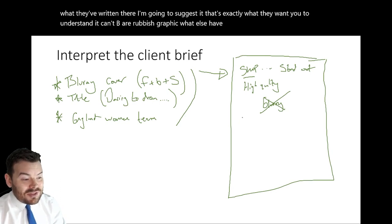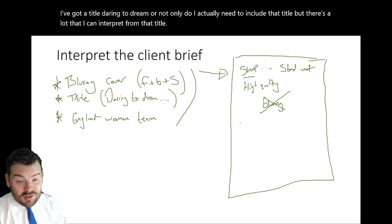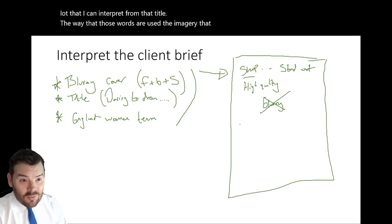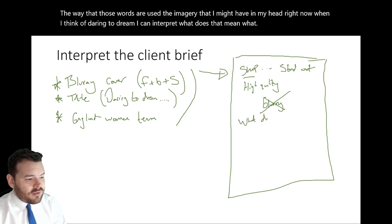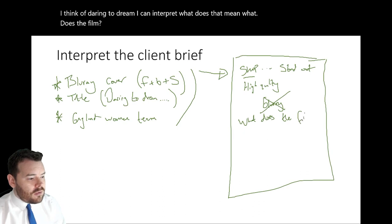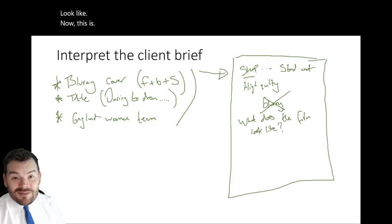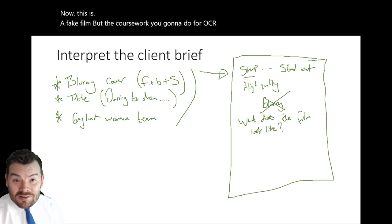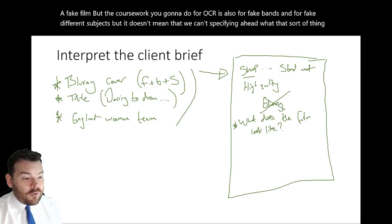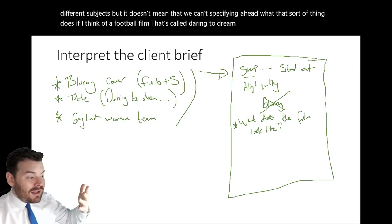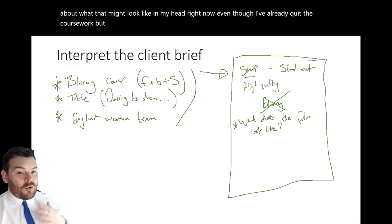What else have I got? I've got a title — Daring to Dream. Not only do I need to include that title, but there's a lot I can interpret from it. The way those words are used, the imagery I might have in my head right now when I think of Daring to Dream — I can interpret what that means, what the film might look like. The coursework you'll do for OCR is also for fake bands and fake subjects, but it doesn't mean we can't specify in our heads what that sort of thing looks like.